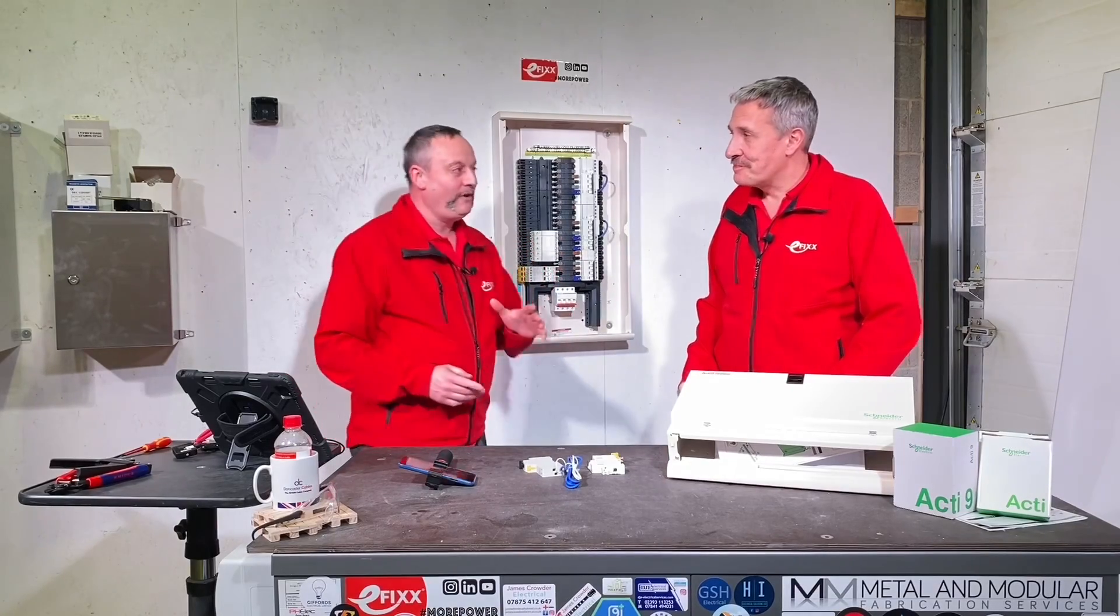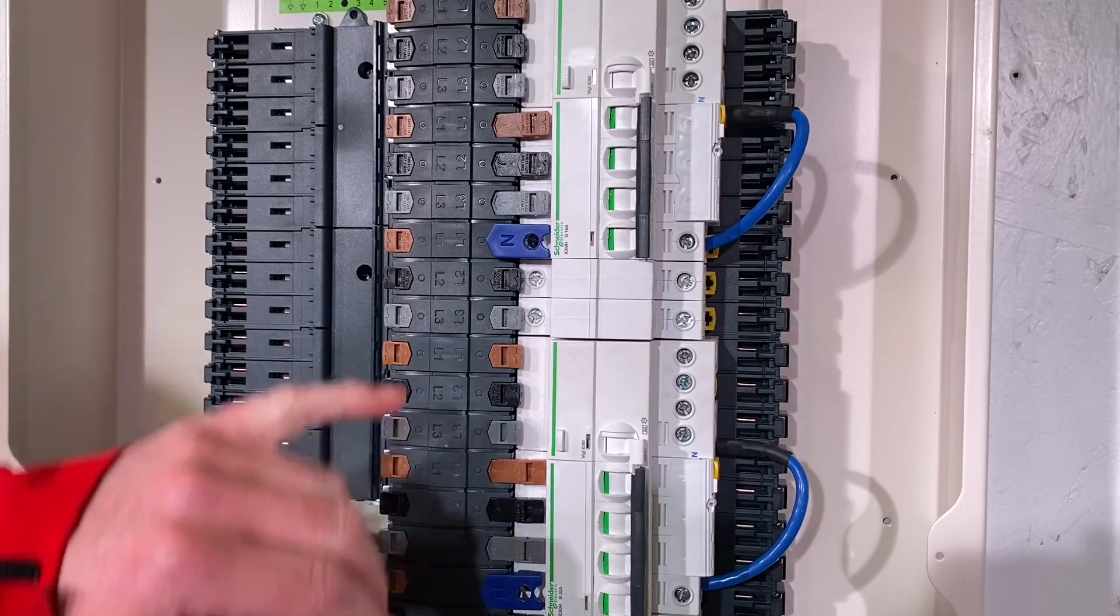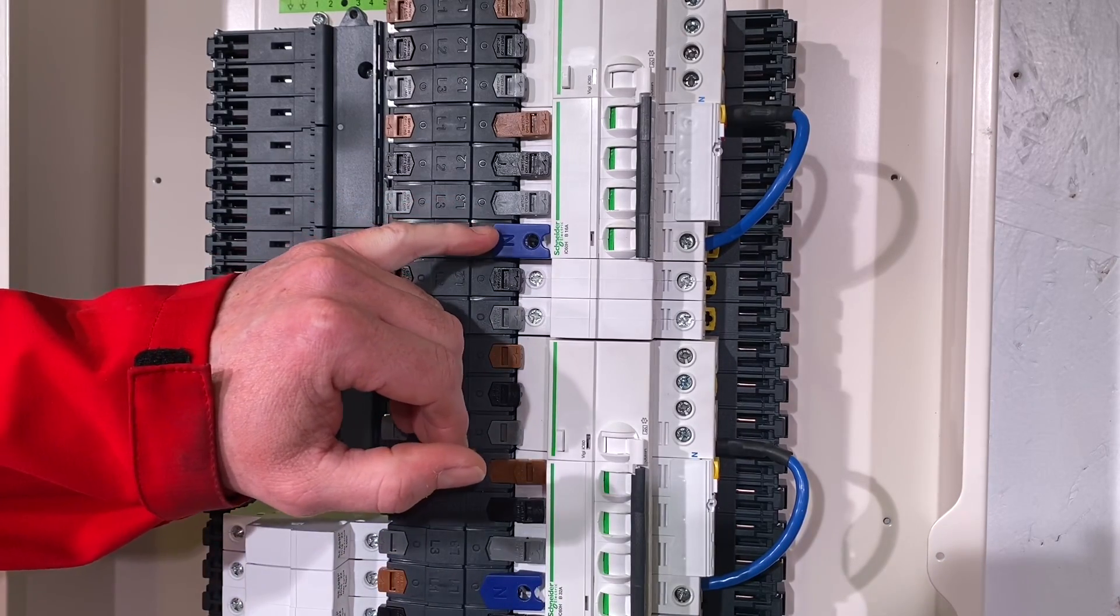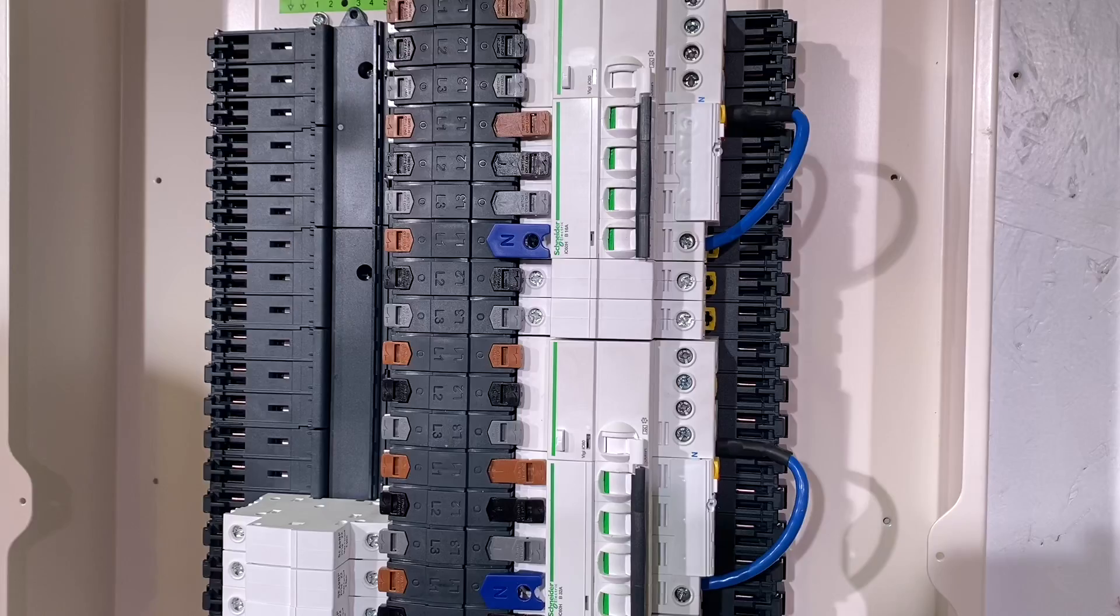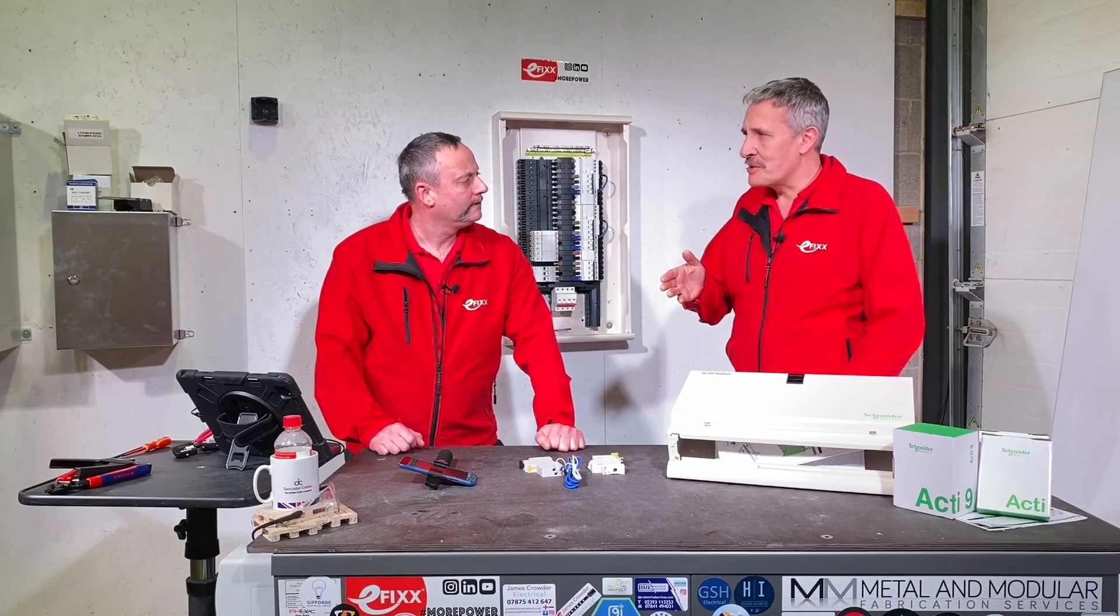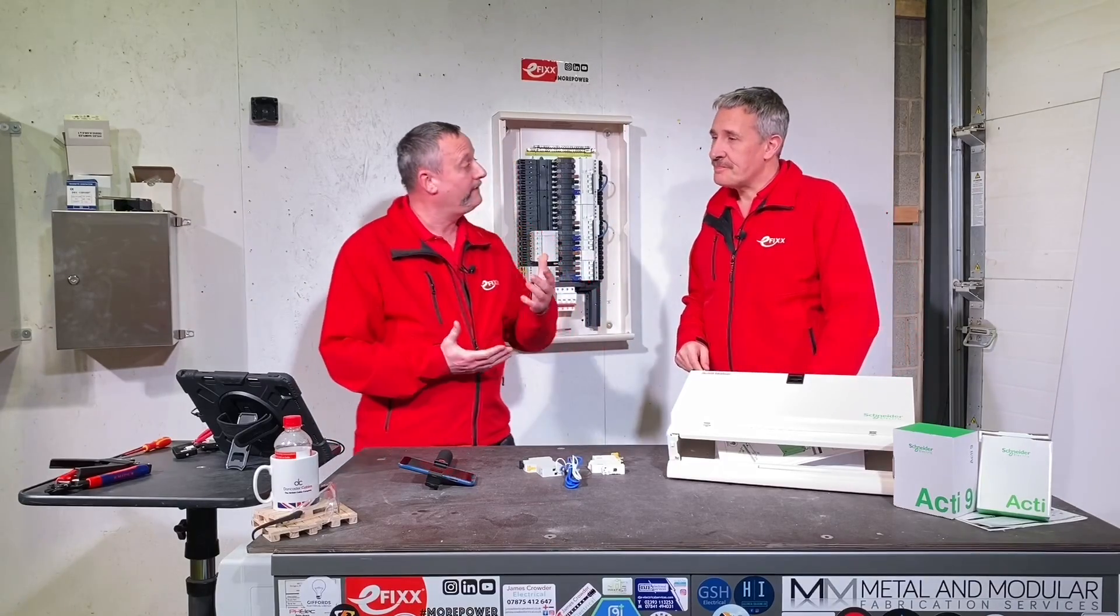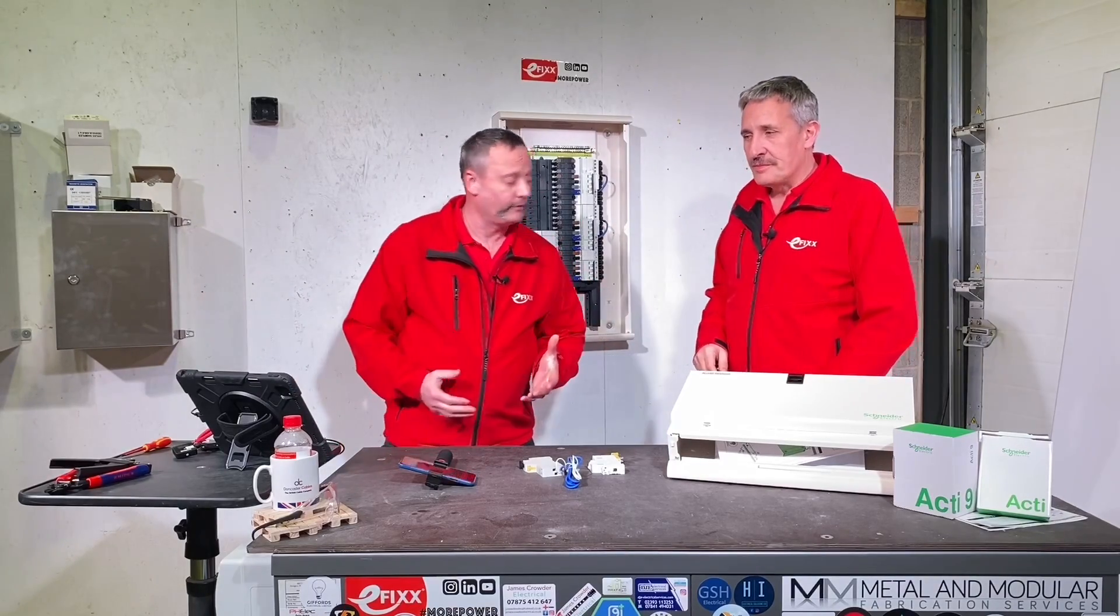Now the keen-eyed amongst you may have noticed a lot more going on on this side of the board, including some blue tabs, which I'm suggesting is probably a neutral connection then Gordon. It is, so that's the distributed neutral. That's something else you can add to this board which is only possible because of the Isobar function. So shall we see how we're going to fit one of those to get a distributed neutral?